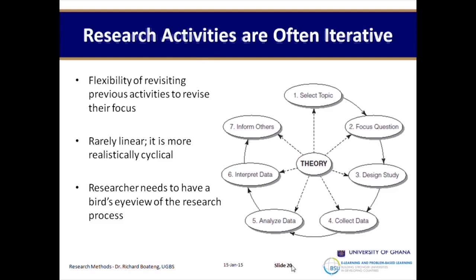The researcher should also know that the research process is not really linear — it is more realistically cyclical. It impacts on each other, keeps going. You are like in a loop: you find something, it comes back, you can inform another part. As you are progressing, other elements in relevance to your theory can impact on each other.